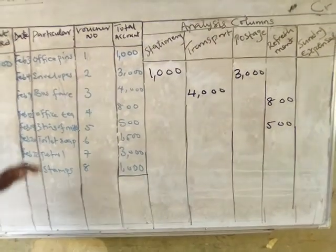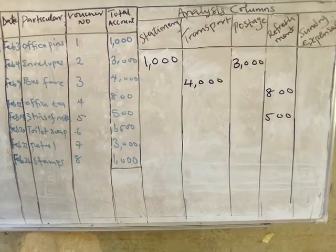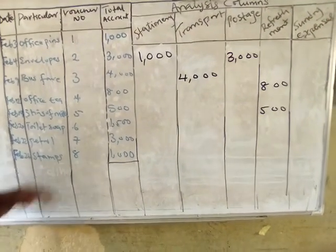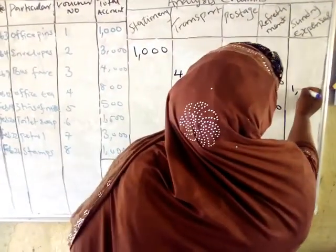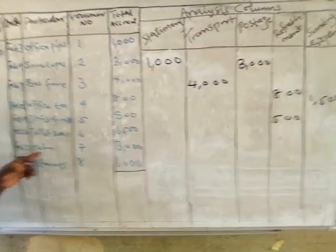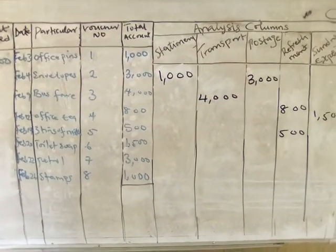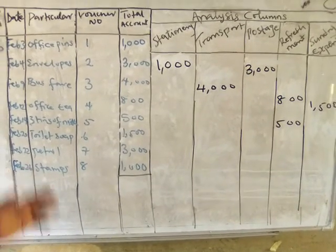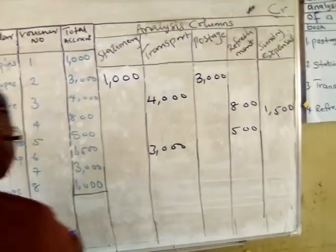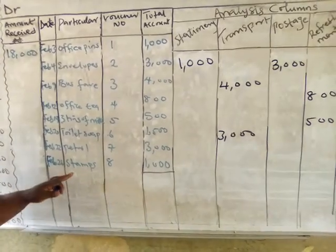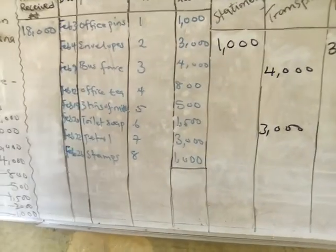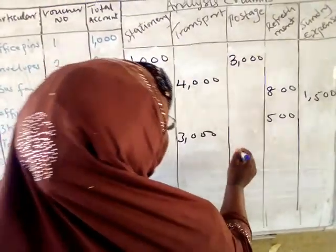Now we have toilet soap. It is not stationery, not transport, not postage, not refreshment — this falls under sundry expenses, amount $1,500. The next item is petrol — as we all know, petrol falls under transport, amount $3,000. The last item is stamp — used on envelopes, so it automatically falls under postage, amount $1,000.